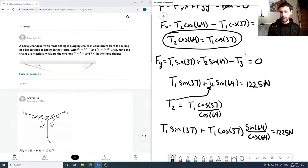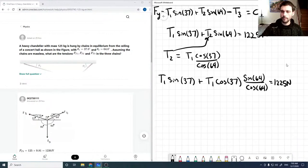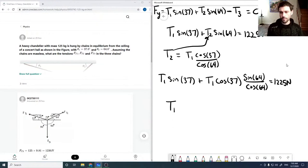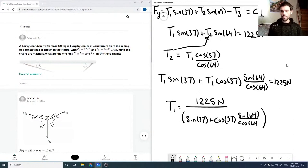Or we can pull the T1 out and completely solve for it. So T1 is 1225 divided by sine 37 plus cos 37 sine 64 over cos 64. So I've just completely pulled T1 out and now we just have numbers. And so that's just equal to 1225 newtons over 2.2383, which is 547.06 newtons.